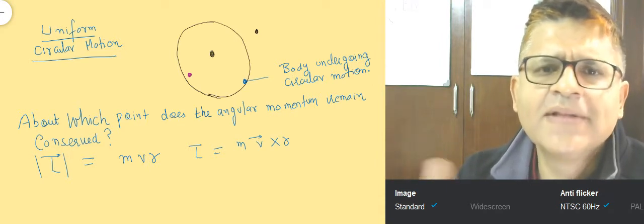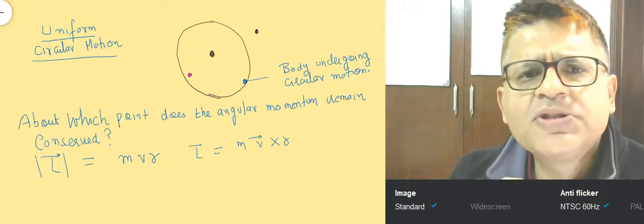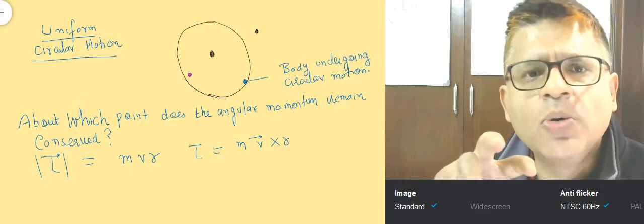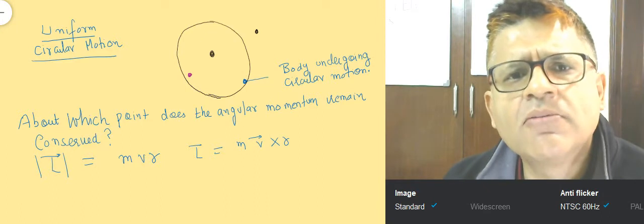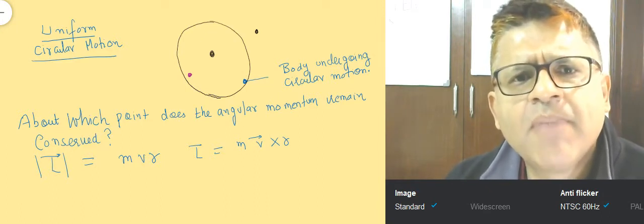The question is: about which point—note the word 'about'—about which point is the angular momentum conserved? Angular momentum is given by mass into velocity into radius (mvr).